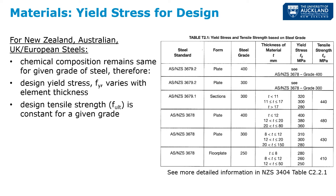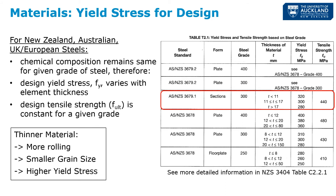Continuing to some subtleties of structural steel materials in New Zealand and Australia: as we go through different thicknesses of plates, we get different yield strengths. The ultimate strength stays the same. For the very common grade 300, as plate thickness goes from 11 millimeters to 17 millimeters, the yield stress drops from 320 MPa to 280 MPa. This comes down to manufacture: as material gets thinner, it goes through more rolling in the steel mill, producing a smaller grain size, and that smaller grain size results in a higher yield stress.